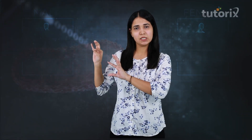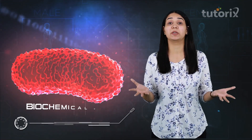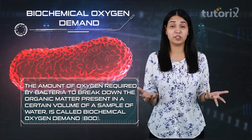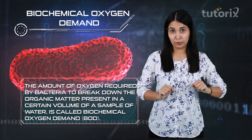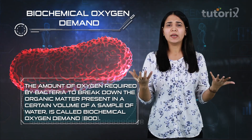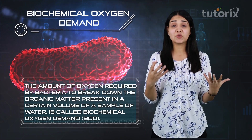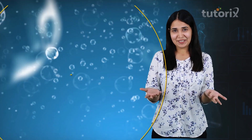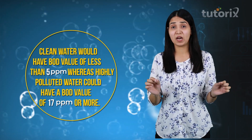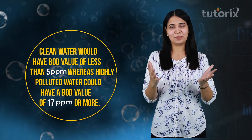This chemical waste breakdown has a name — it is called the biochemical oxygen demand, or BOD. That is the amount of oxygen required by bacteria to break down the organic matter in a sample volume. With the help of this value, we can find out how much oxygen is needed and what is the extent of pollution in the water. For clean water, the value is 5 ppm or less than that. When the water is polluted, the value is above 17 ppm — ppm meaning parts per million.